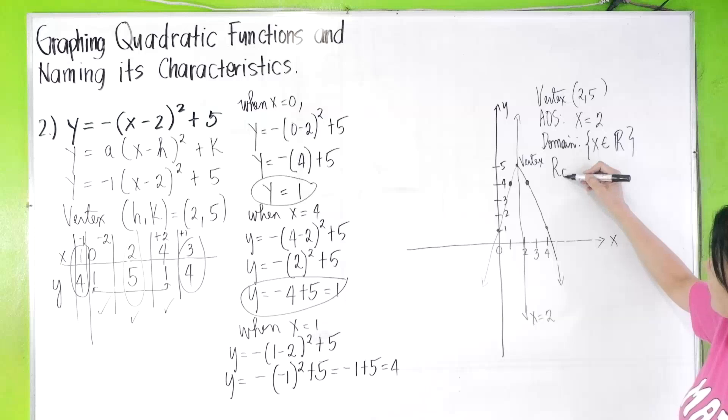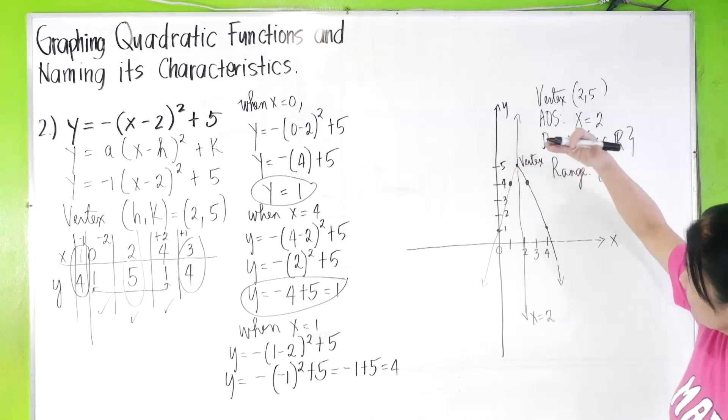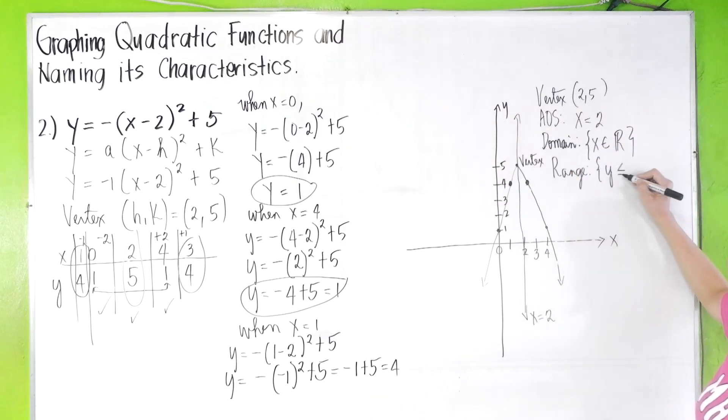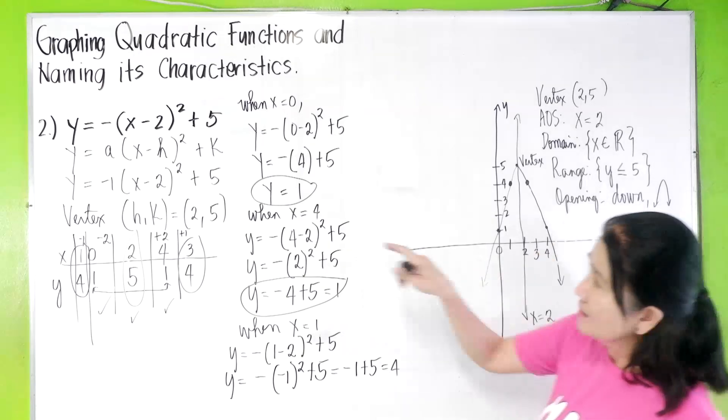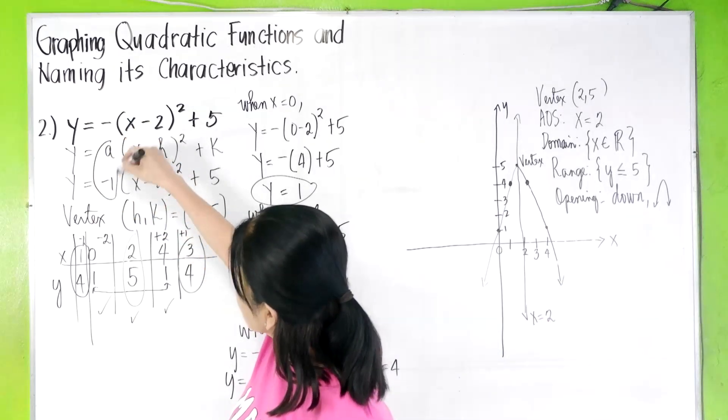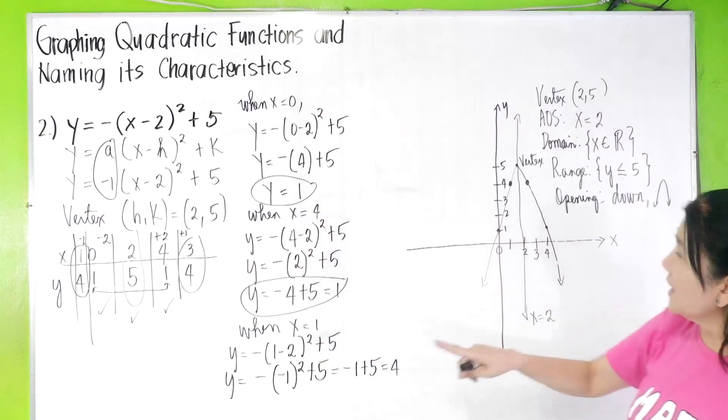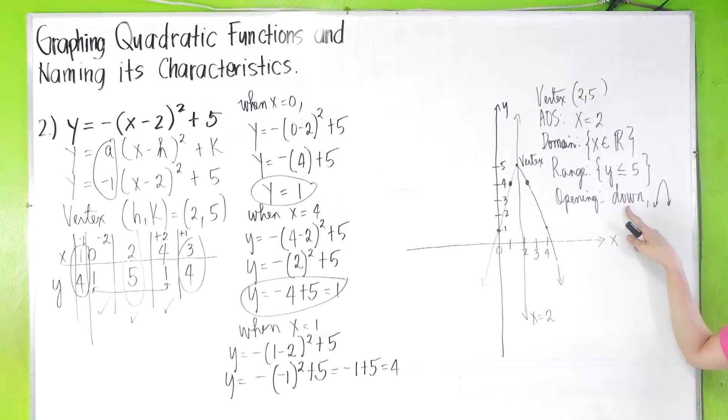What is our range? Range is the set of all y values that are from the vertex down. So less than or equal to the y value, which is five. The y value five. And then what is the opening? It's opening down, downwards, opening down. As we can see, you can check, the value of a is negative one. Remember, when the value of a is negative, your parabola must be opening downward. So this is correct.